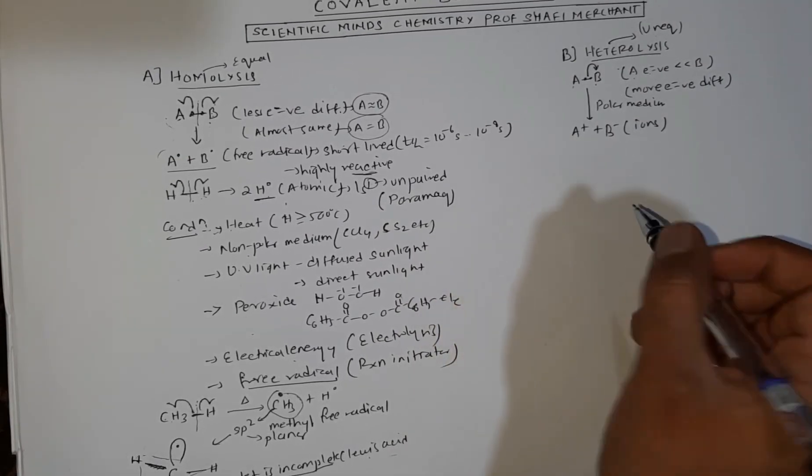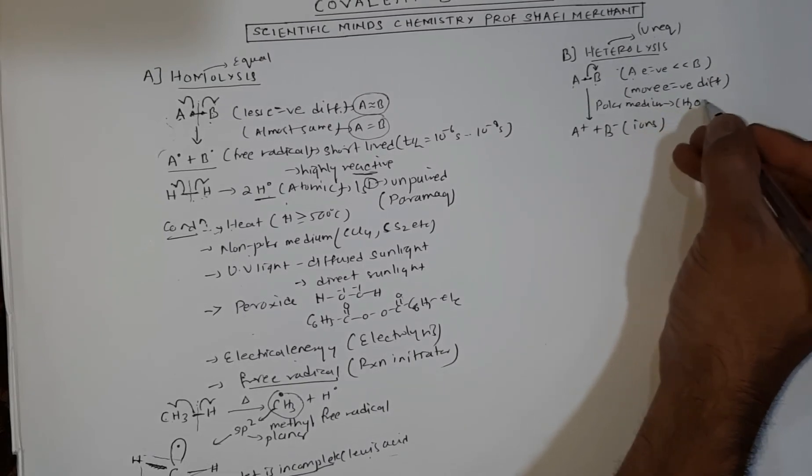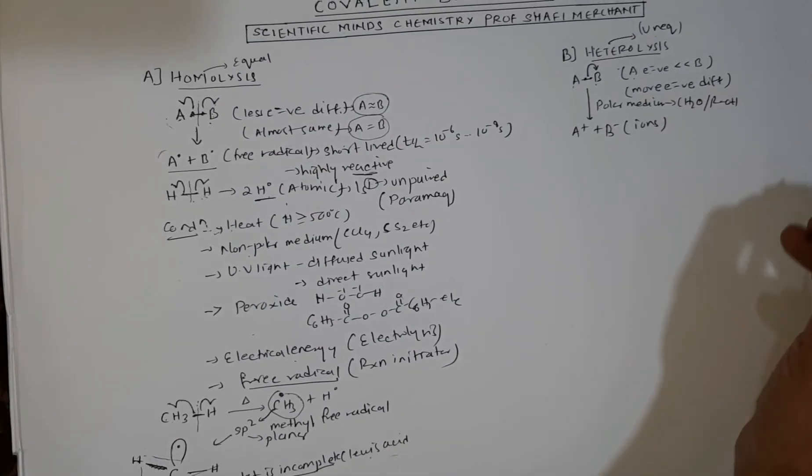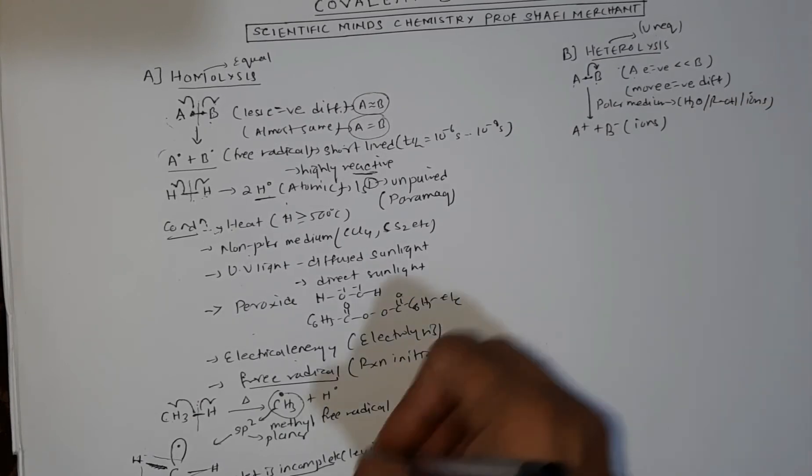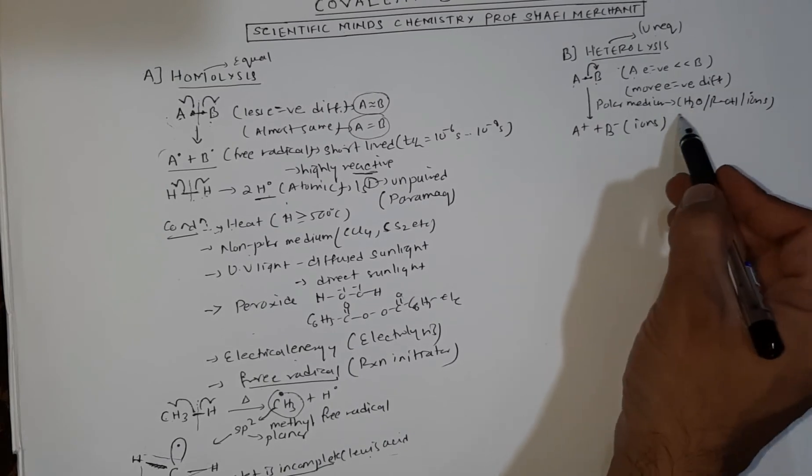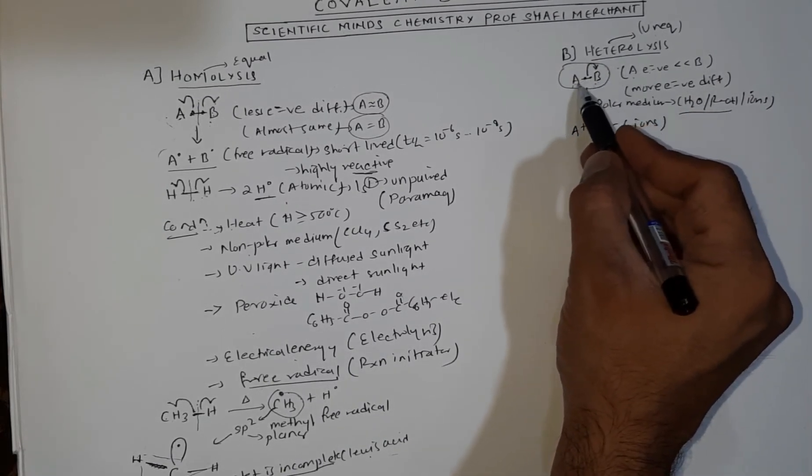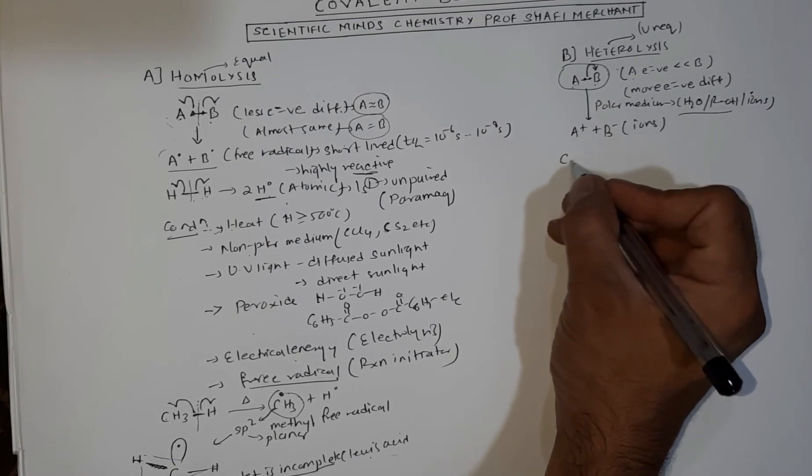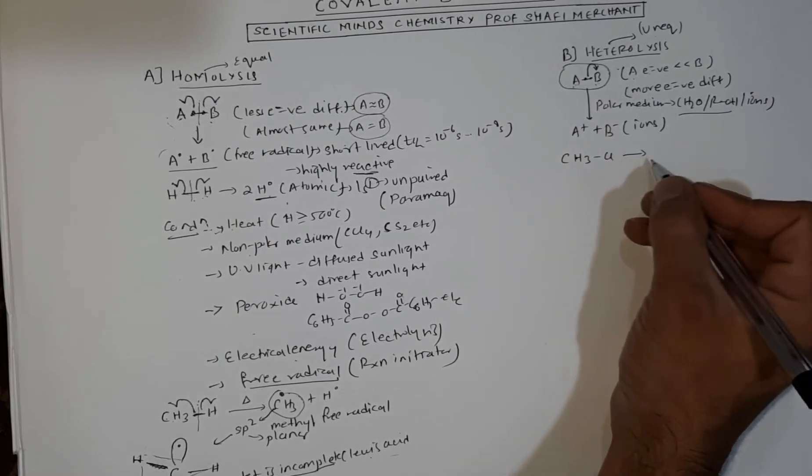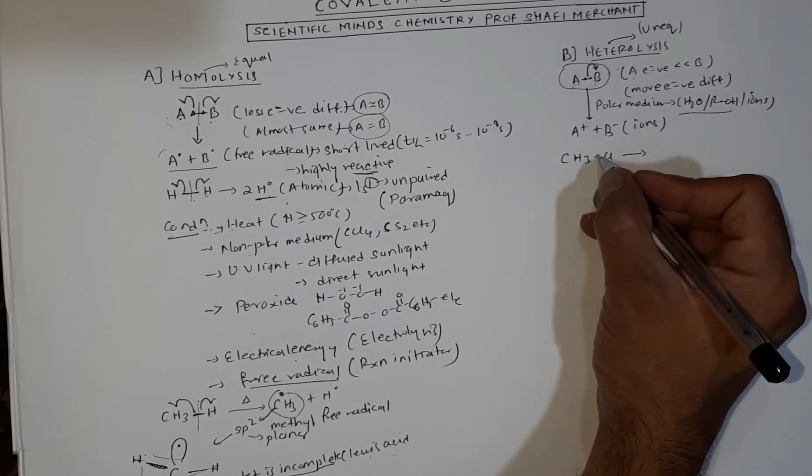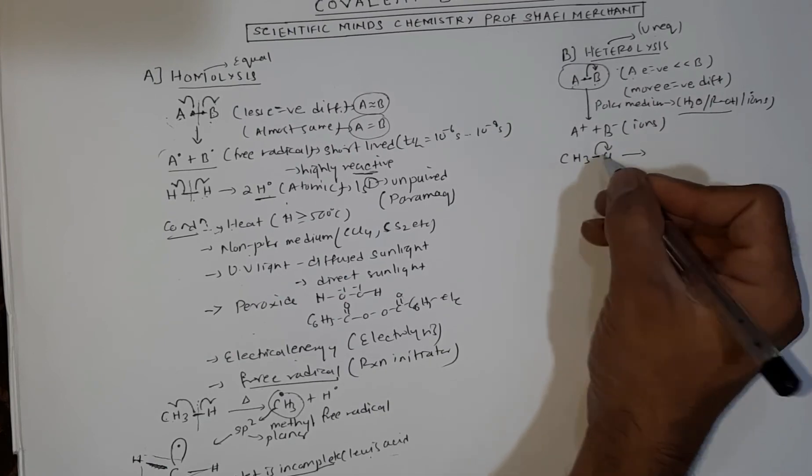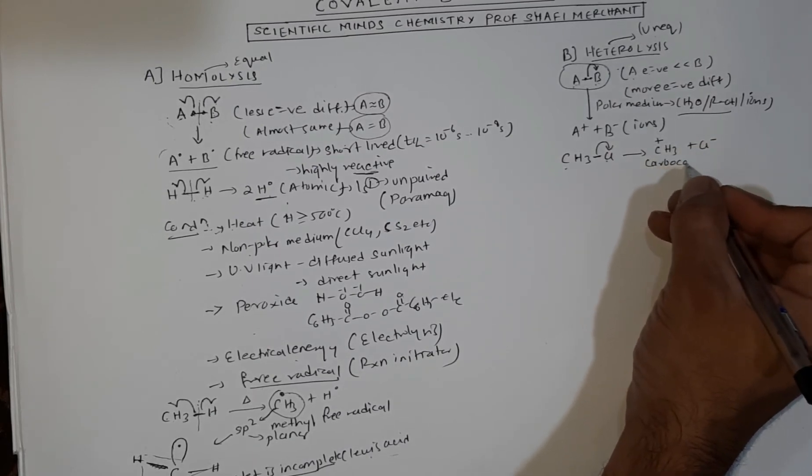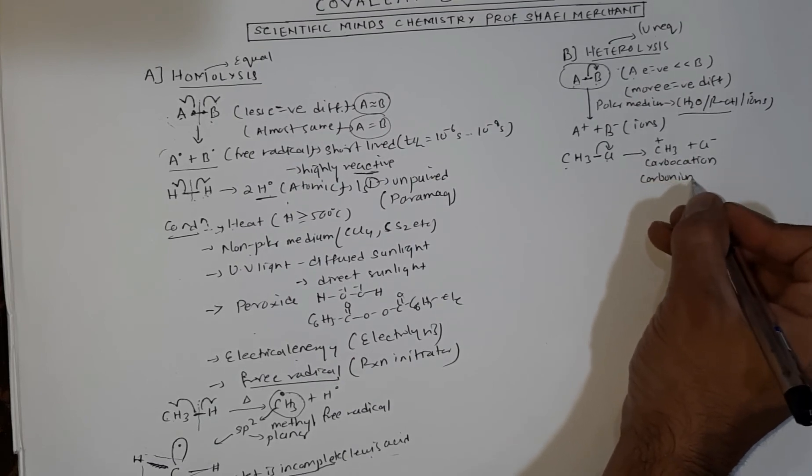You need polar media like H2O or alcohol. Or presence of certain ions during acid-base mechanism. Either ions or polar media should be there for unequal breaking. But there should be large electronegativity difference so the entire electron pair shifts to one atom. For example, methyl chloride will undergo dissociation in a polar media. The entire electron pair will shift to chlorine since it is more electronegative than carbon.